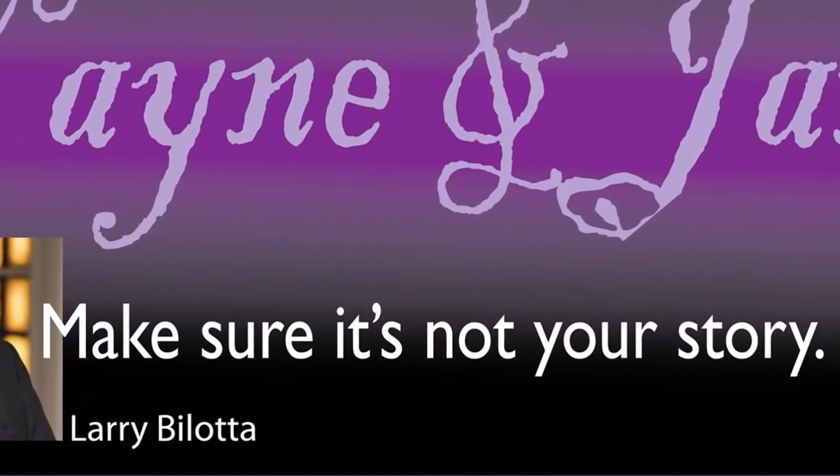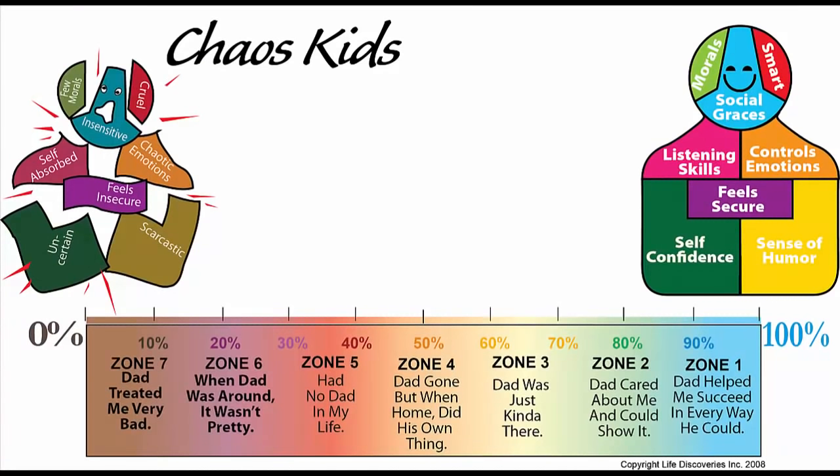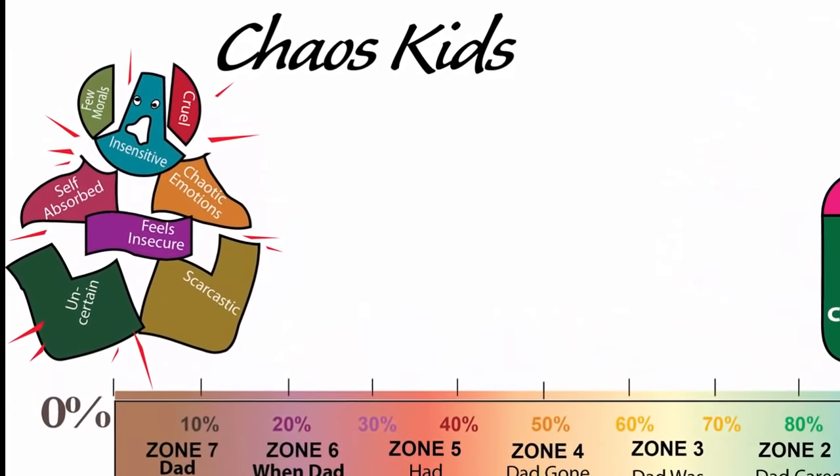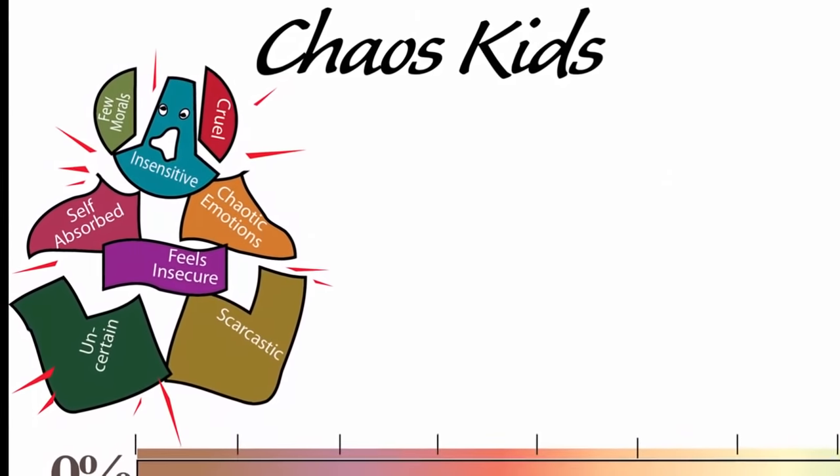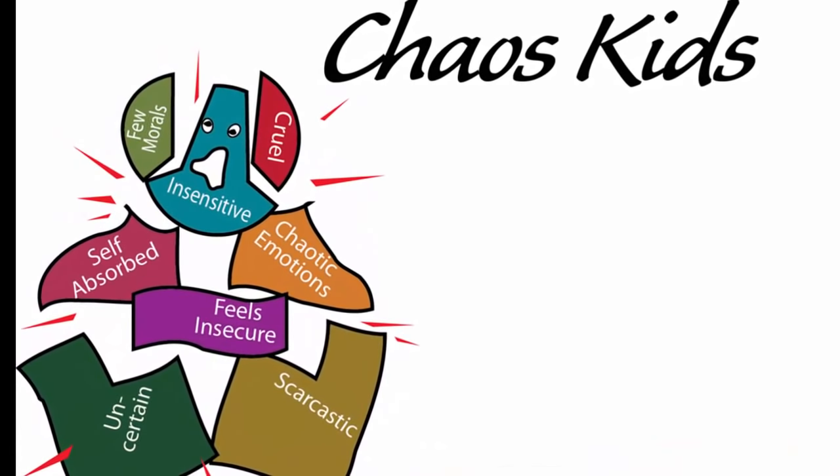Both of them were born into Chaos Kid homes, and both of their brains were programmed by Chaos Kid parents. Chaos Kids are children born to parents who never dealt with their own childhood chaos. These parents end up pouring that chaos into the brains of their own children, and that chaos takes them over when they marry as adults. It's often called the midlife crisis.